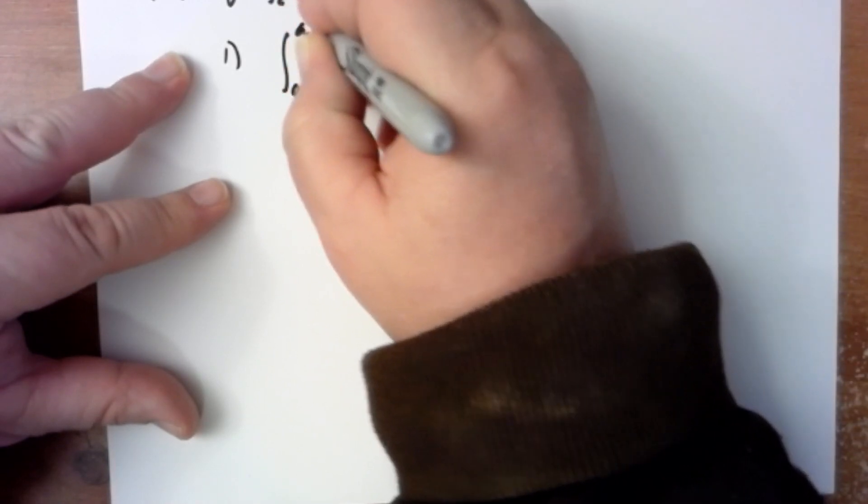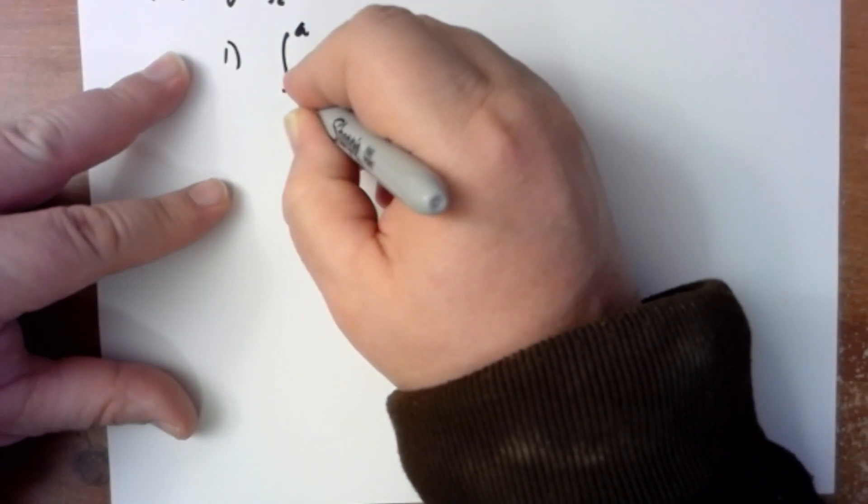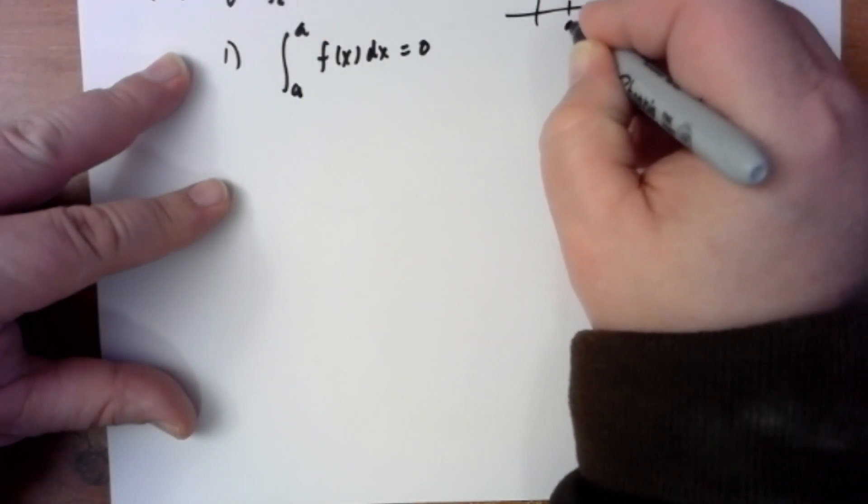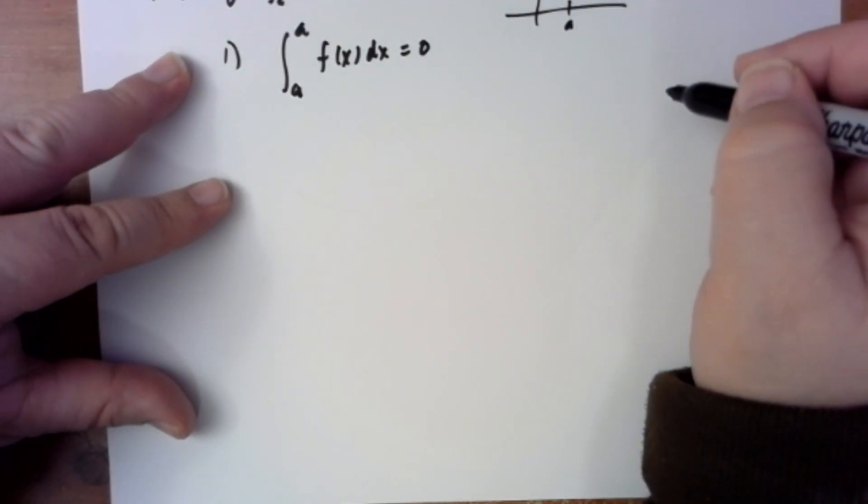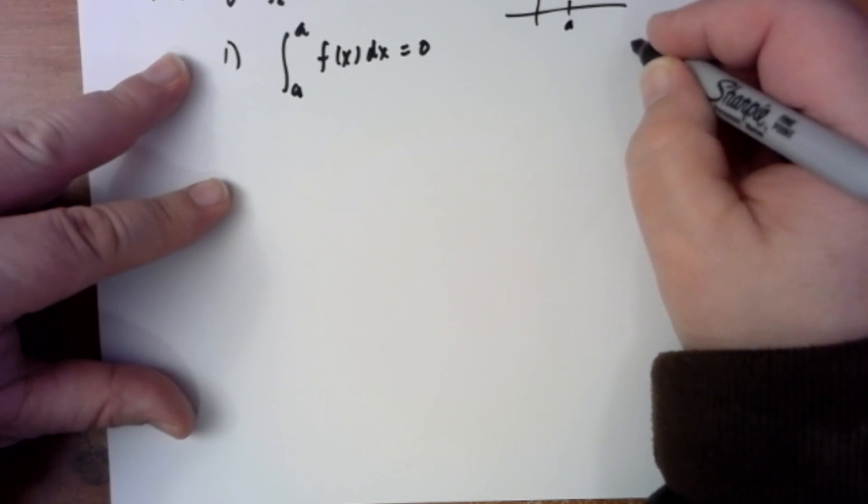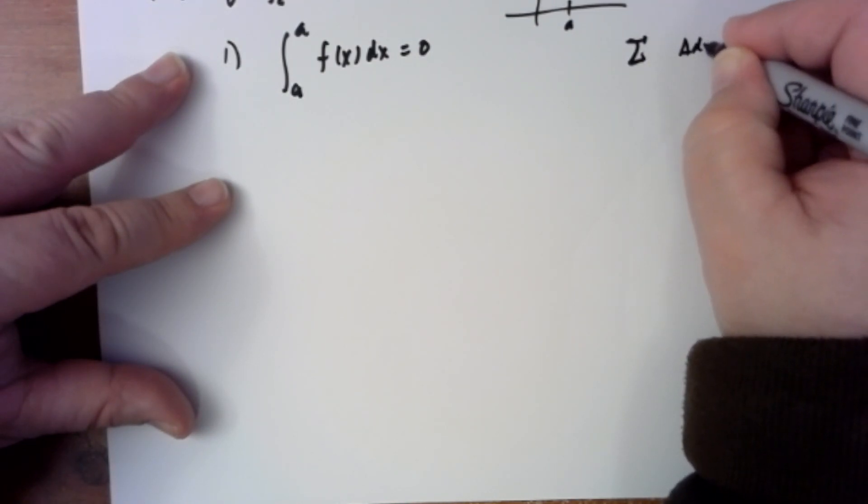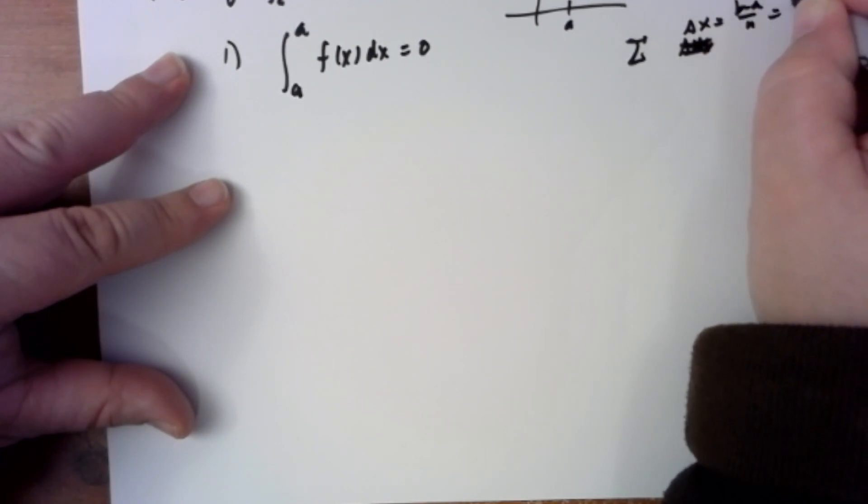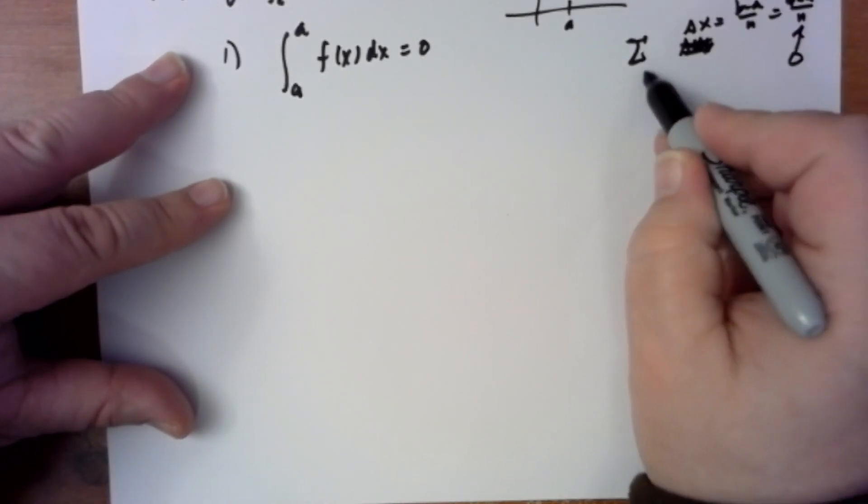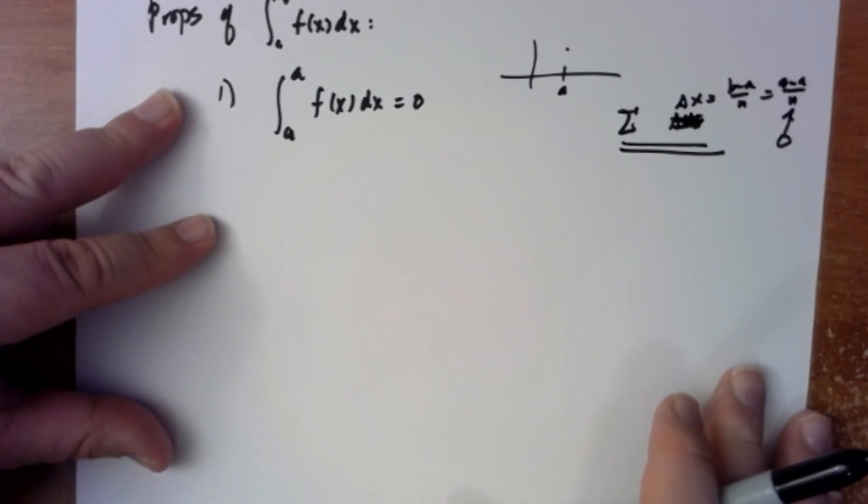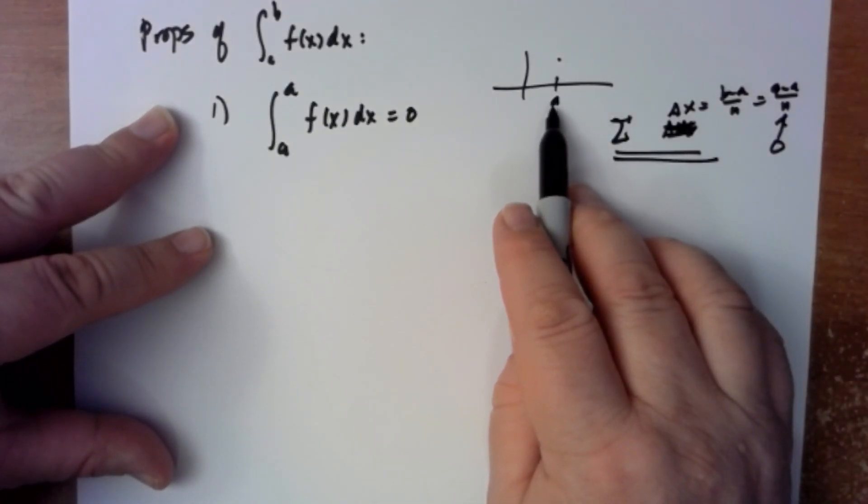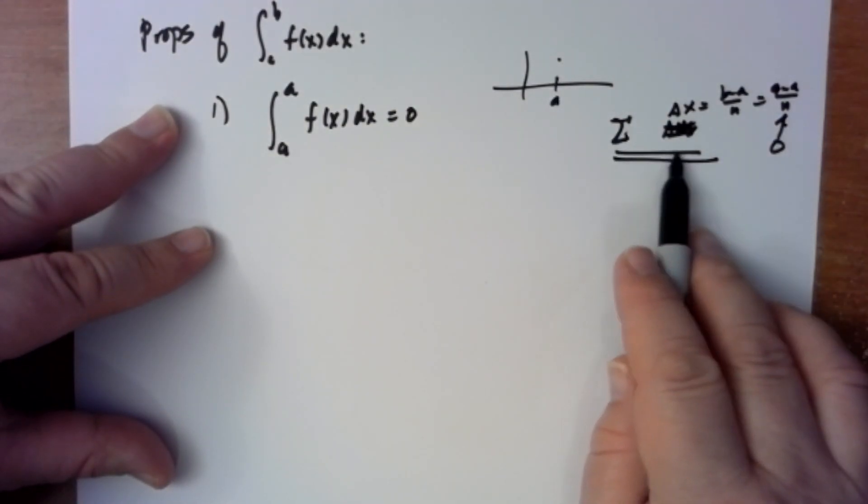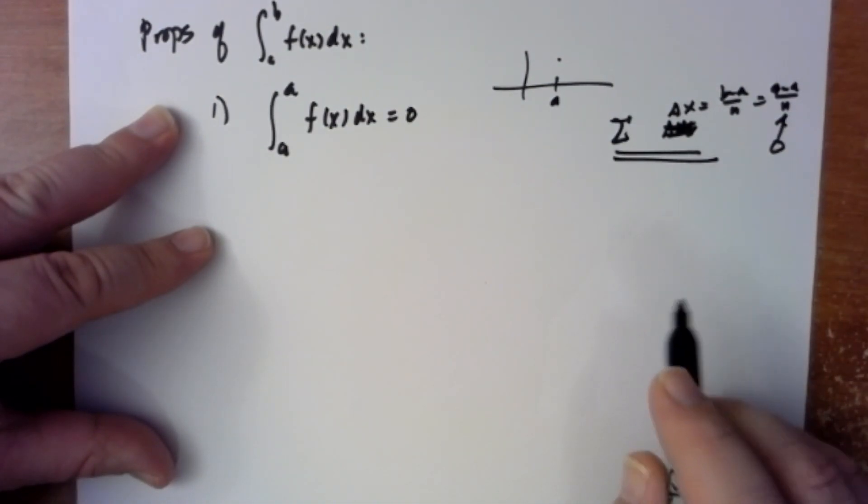The first property is that if you take the integral from a to a of f(x) dx, you just get zero. Geometrically, what are you doing? You're computing the area under a single point. In the Riemann sum, what you're doing is delta x, which is b minus a over n, just becomes a minus a over n, and so that's equal to zero. So you're just taking the area under a point, and so if you take a look at your delta x, that's just zero.